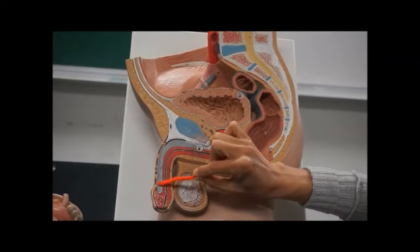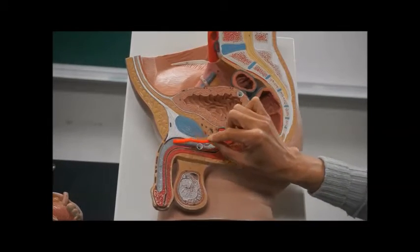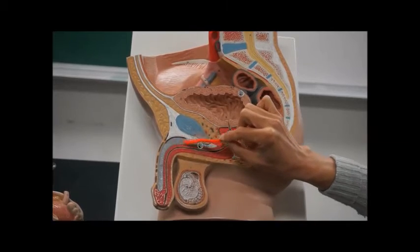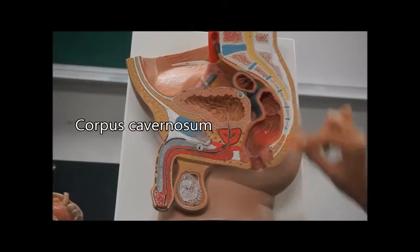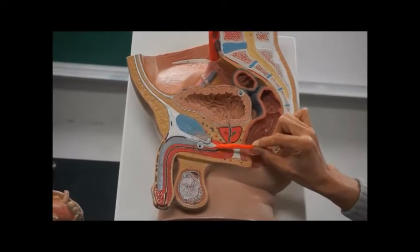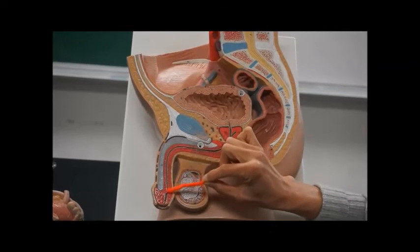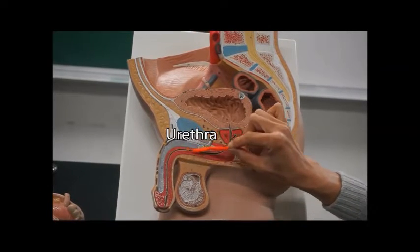Right here, this is an erectile tissue called the corpus cavernosa. This erectile tissue right here that surrounds the urethra—so this tube here is the urethra.